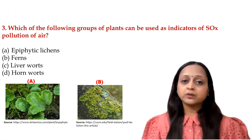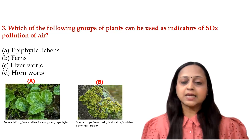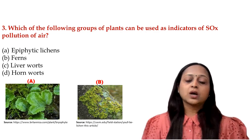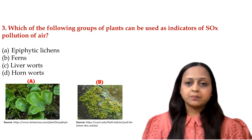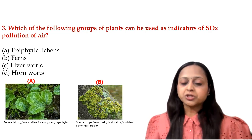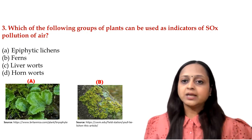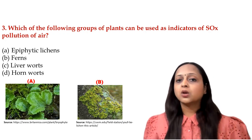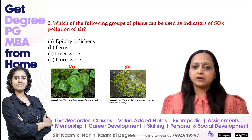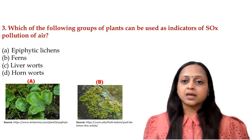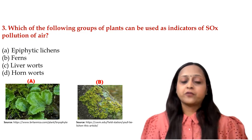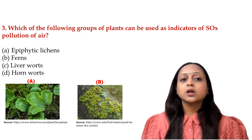Next question: which group of plants can be used as an indicator of sulfur dioxide pollution in air? This has also been discussed in previous slides. Biological indicators are living components that indicate which type of pollution is present. Here we need to identify which plant indicates oxides of sulfur pollution in air.